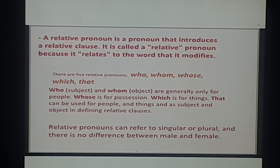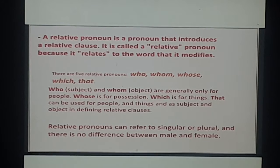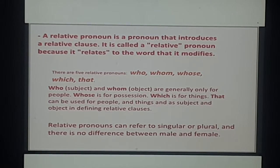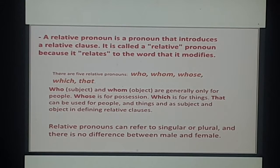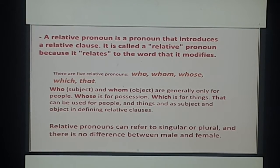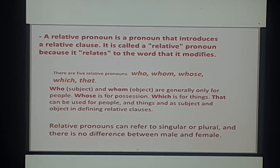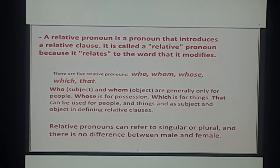A relative pronoun is a pronoun that introduces a relative clause or a dependent clause. It is called a relative pronoun because it relates to the word that it modifies. There are five relative pronouns: who, whom, whose, which, and that. 'Who' is used as a subject; 'whom' is used as an object. 'Who' and 'whom' are generally only for people. 'Whose' is for possession. 'Which' is for things. 'That' can be used for people and things, and as subject and object in defining relative clauses.